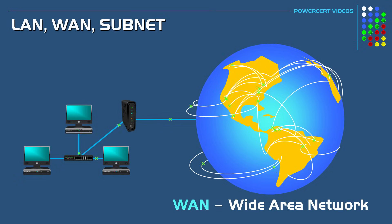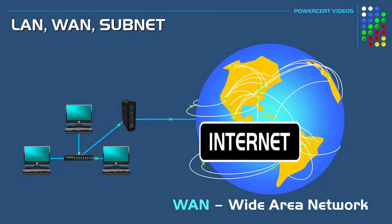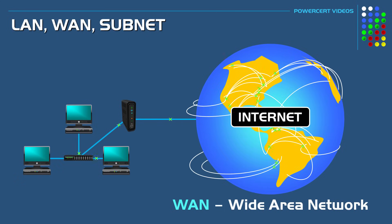A wide area network is a large network of millions of computers that spans over a large geographical area such as a country, continent, or even the entire globe. Or in other words, the internet. The internet is an example of a wide area network.